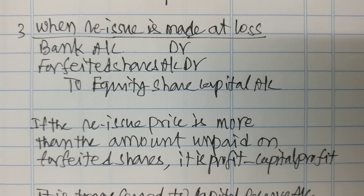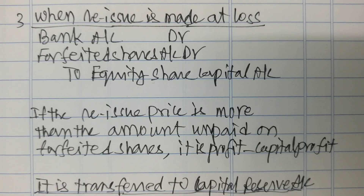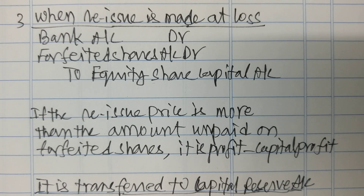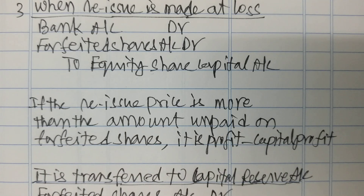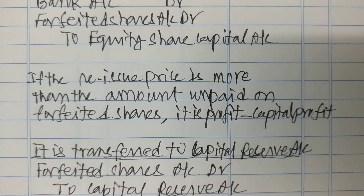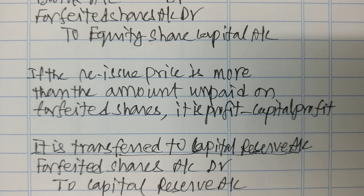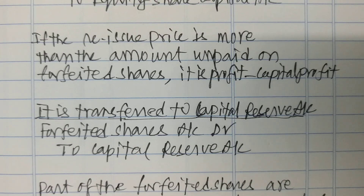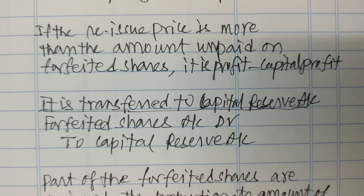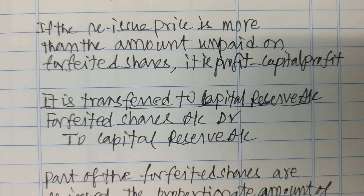When the reissue price is more than the amount unpaid on forfeited shares, it is a capital profit. It is transferred to the capital reserve account. So the entry is forfeited share account debit to capital reserve account.